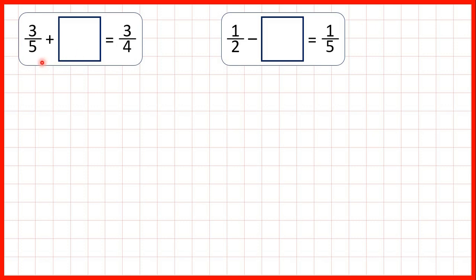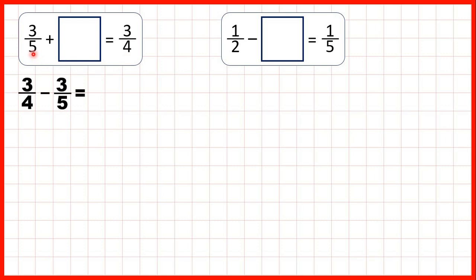First: 3 fifths plus what equals 3 quarters? Here, because we have a missing number addition, we need to use subtraction to find our missing number. So we need to work out 3 quarters minus 3 fifths.